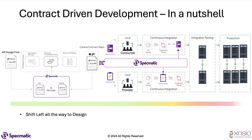Not only is this shifting to design time, but for the developers — both provider and consumer — there is a very nice feedback loop working closely on their local laptop, using the contract as a stub and contract as a test powered by Specmatic. This allows them to enhance the developer experience. It's a very seamless developer experience and it drastically improves collaboration between provider and consumer, using something they're already very familiar with — the GitOps process.